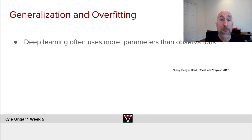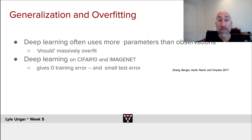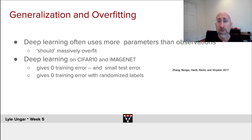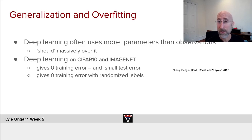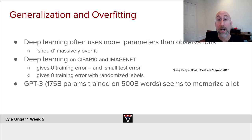Deep learning often uses as many parameters as it has observations, so it should massively overfit. Researchers like Zhang, Benjou, Hartrecht, and Finn Jalson have looked at various image data sets and shown that you can train down to zero training error — you've overfit all the noise — and still get a small test error. You can take those same networks, randomize the labels, and they can still learn with zero training error on the randomized labels. Of course, out of sample it's noise because there's nothing to learn. So they're able to fit these complex functions and yet somehow not overfit horribly.